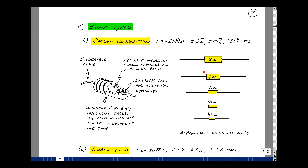The physical size of the resistor is also proportional to its wattage rating, as I mentioned before. Here's roughly the sizes of a 2-watt, 1-watt, half-watt, quarter-watt, and eighth-watt resistor.